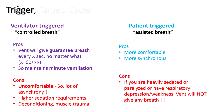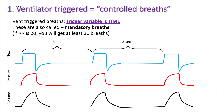Patient-triggered breaths are more comfortable as they are more synchronous with the patient's breathing. However, if your respiratory drive is compromised — for example, if you are heavily sedated, paralyzed, or have muscle weakness — the ventilator will not give you any breath. In ventilator-triggered breaths, the trigger variable is time. If you set your respiratory rate at 20, you will get at least 20 breaths spaced every 3 seconds. These are mandatory breaths.